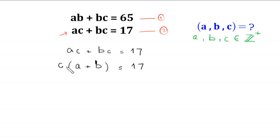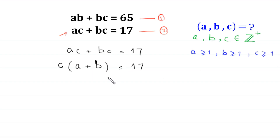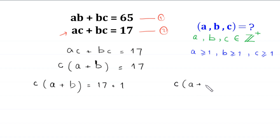Now we have a product of two factors on the left-hand side, and since A, B, C are positive integers — meaning A ≥ 1, B ≥ 1, C ≥ 1 — we have two cases. Case 1: C times (A plus B) equals 17 times 1. Case 2: C times (A plus B) equals 1 times 17.